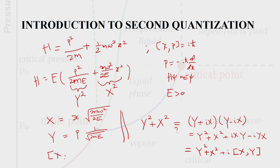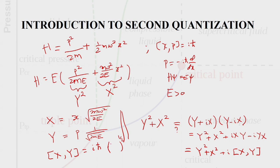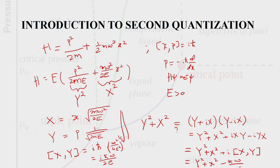What is the commutator of capital X with capital Y? From their definitions, it inherits the fundamental commutator [x, p] = iħ. Working through the prefactors — the square root of m omega squared over 4E squared, with m cancelling and 2 times 2 giving 4 — the commutator [X, Y] equals iħ omega over 2E. So Y squared plus X squared equals (Y − iX)(Y + iX) minus a constant term, which turns out to be minus ħω over 2E.